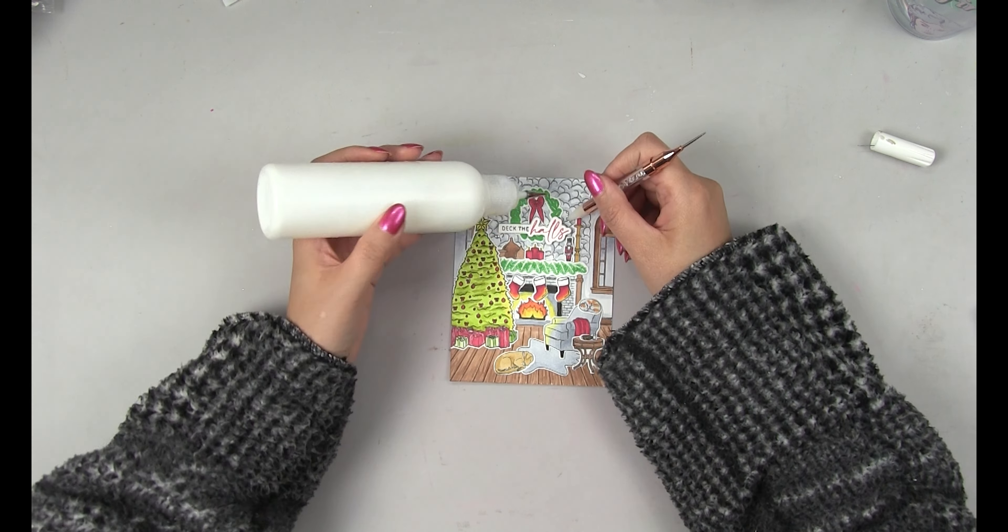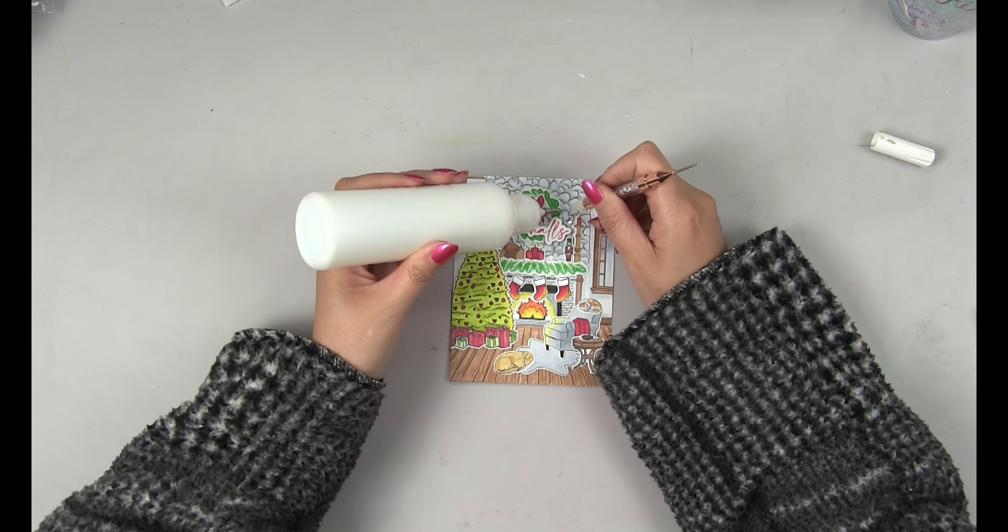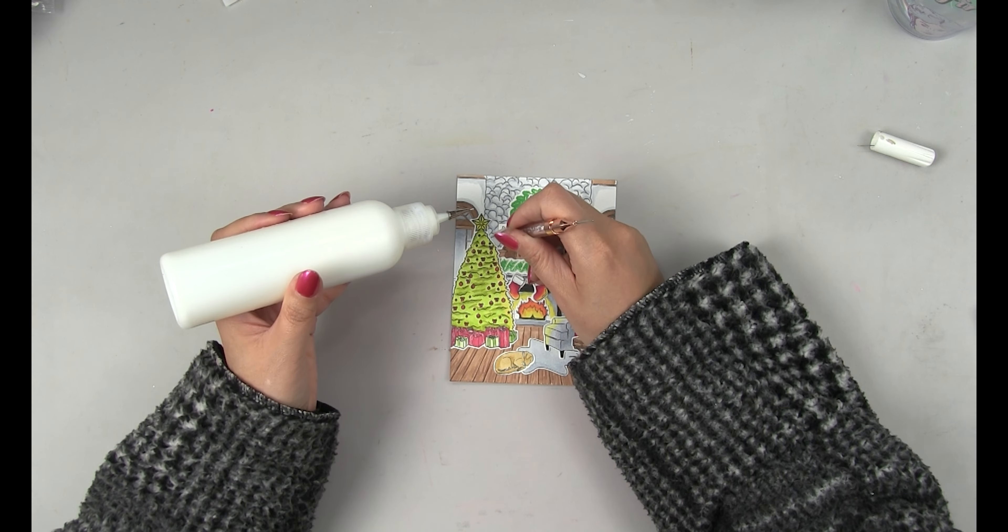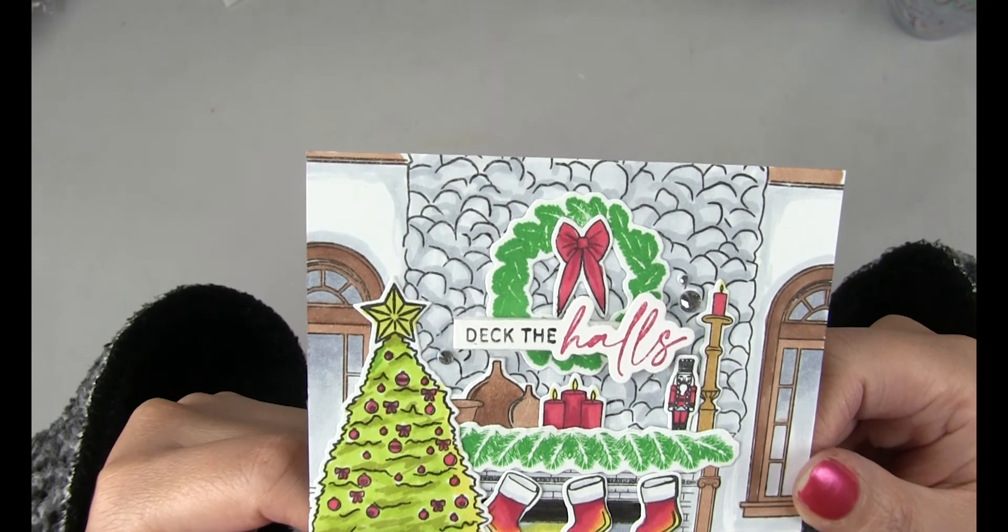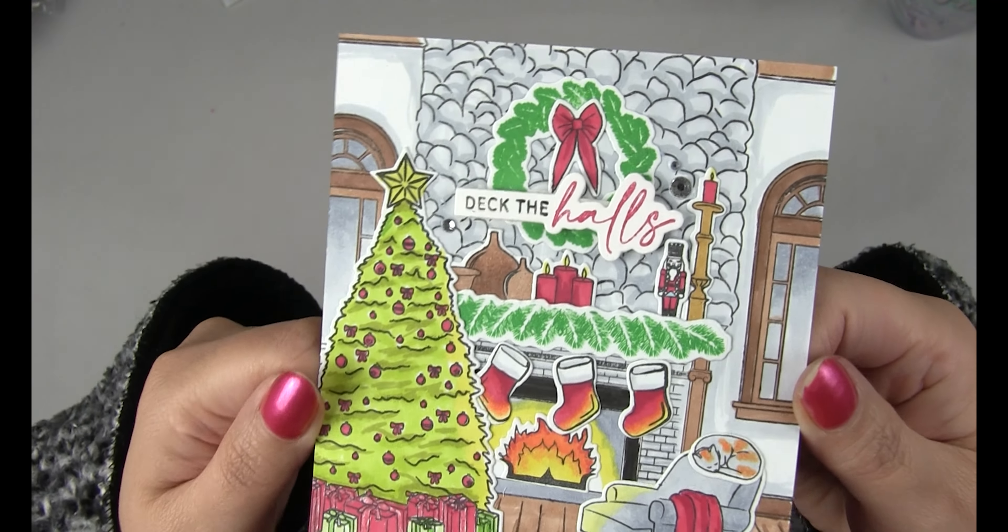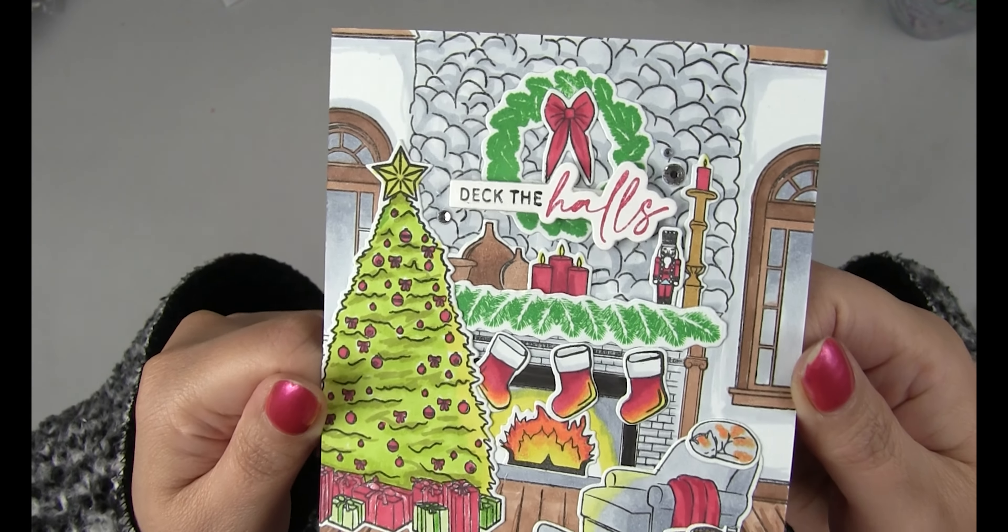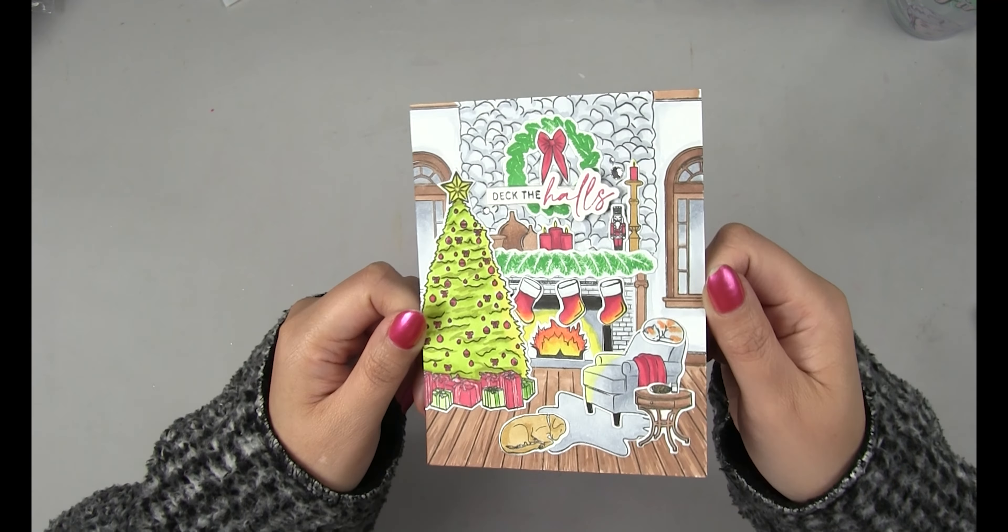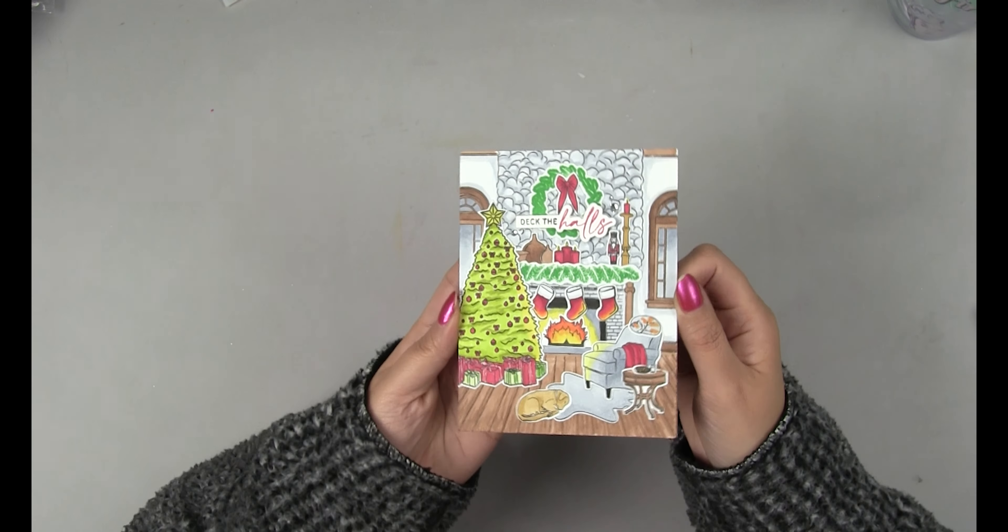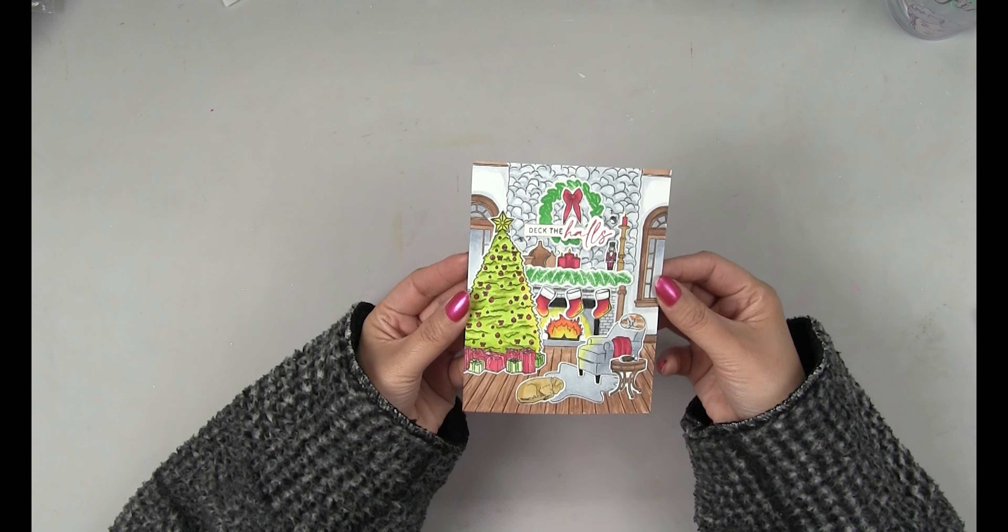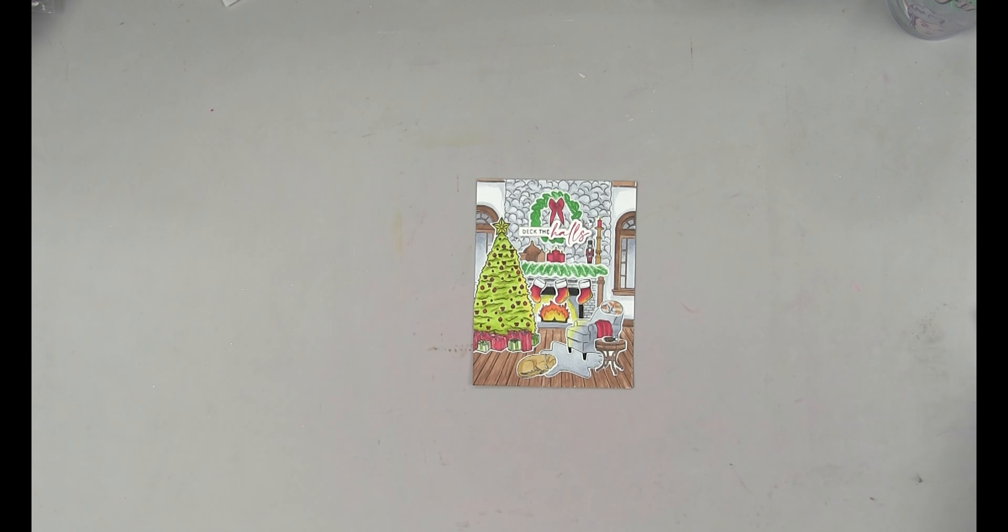And then lastly we're just going to use our clear rhinestones. I added it in a visual triangle around my sentiment and my card is now complete. I hope you guys enjoyed today's card and video. If you haven't done so already be sure to give the video a like and make sure to subscribe to our channel because I'll be updating it more regularly. Thanks for watching guys. I'll see you next time.